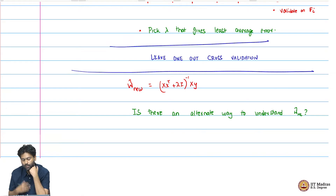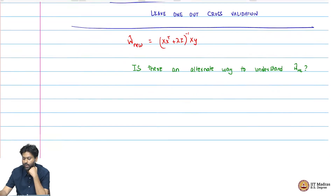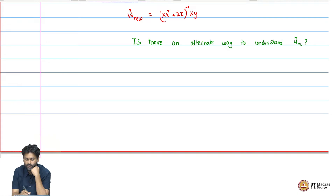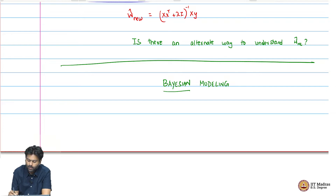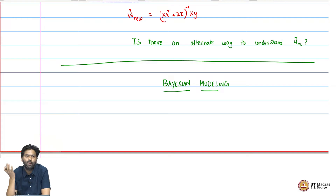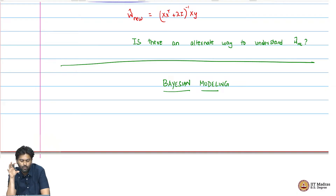Let me tell you what the solution means and what the methodology is. The methodology is just a Bayesian modeling approach. So we are going to take a Bayesian approach. In Bayesian modeling, you have a prior over the parameter you are trying to estimate, then you have a likelihood as usual, and then you will get a posterior which depends on the prior and the likelihood.